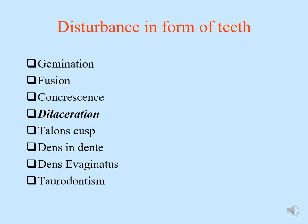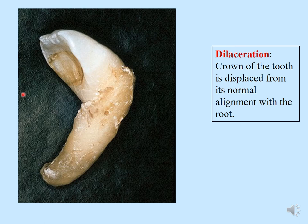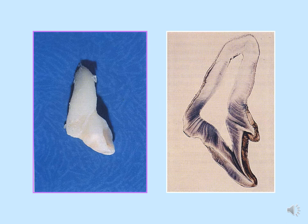The next is dilaceration. This is a picture of a dilacerated tooth that has been extracted. Dilaceration is when the crown of a tooth is displaced from its normal alignment with the root — there is an angulation between crown and root. The most common teeth that are dilacerated are mandibular third molars. This histological ground section clearly shows the angulation between the crown and the root.